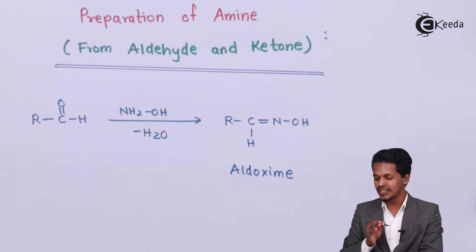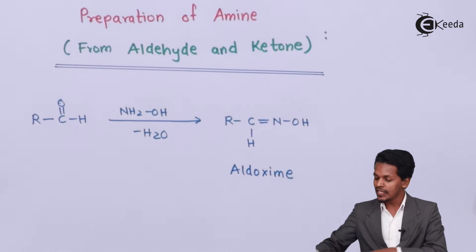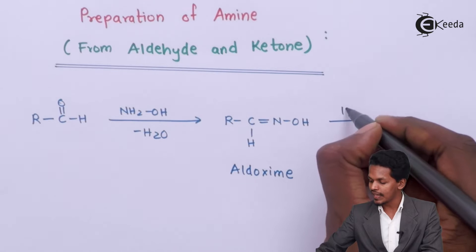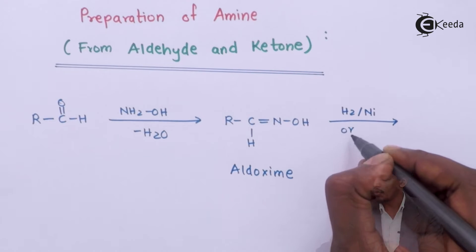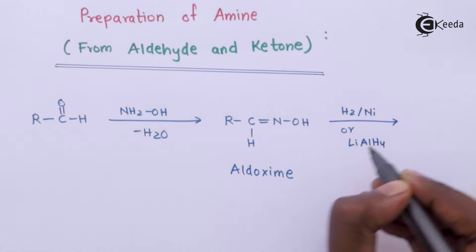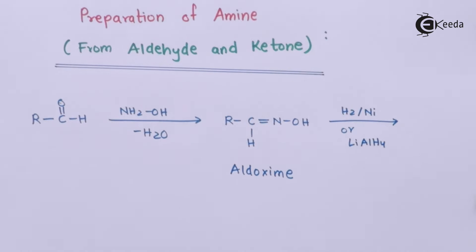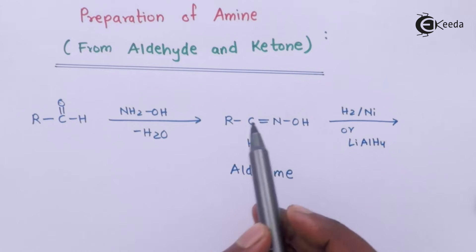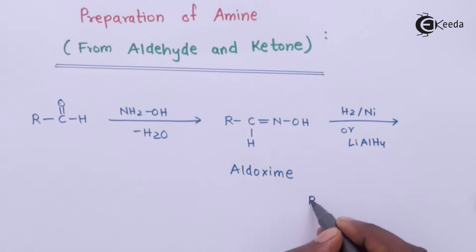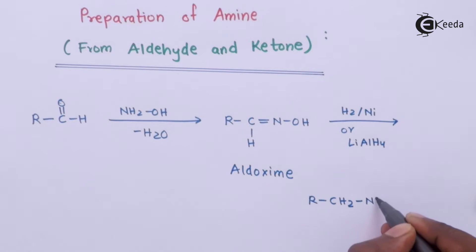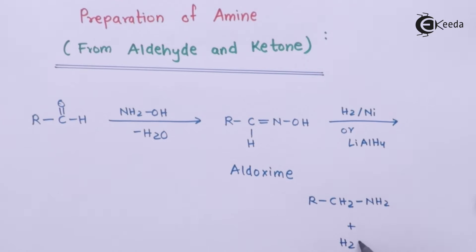The reaction doesn't stop here because this is not the product we need. We reduce this aldoxime with the help of H2 in presence of a nickel catalyst, or with lithium aluminium hydride, or with sodium dissolved in ethanol, which produces nascent hydrogen. Because of that, the C double bond N gets reduced to form RCH2-NH2, and water is removed as a byproduct. This is how we convert an aldehyde into an amine, and this product is a primary amine.